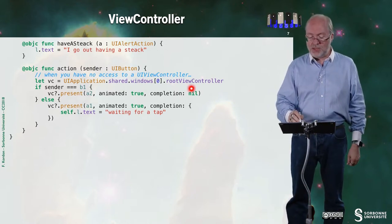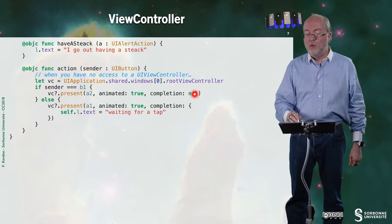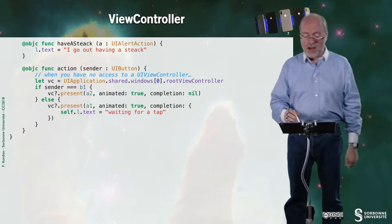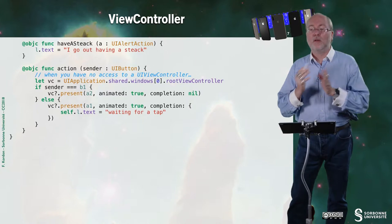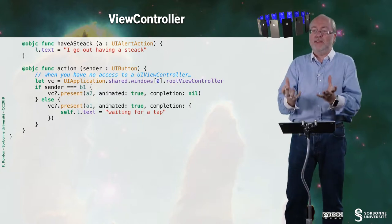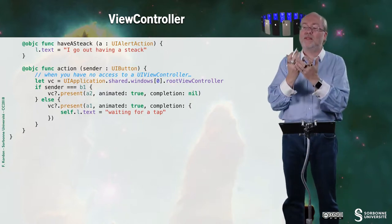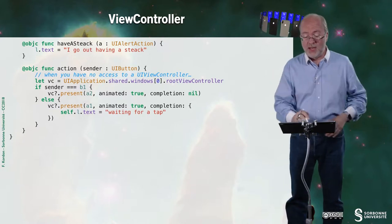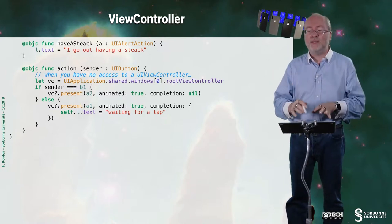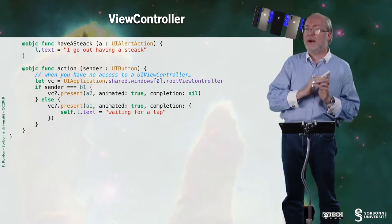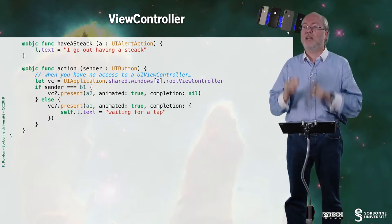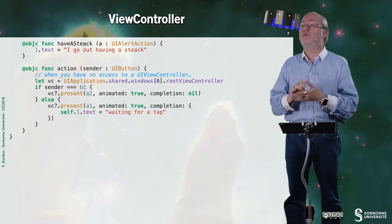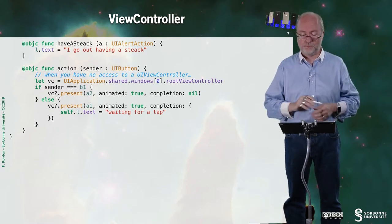And here you see that I present A2 without any completion. Or I present A1 with a completion that is executed when the presentation is done, and not when the action is completed. That will state "waiting for a tap". And if you have a look back at the demo, you will see that waiting for a tap occurs before you have to tap.